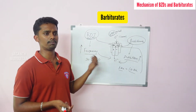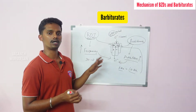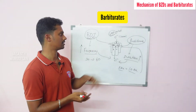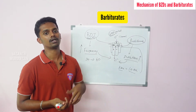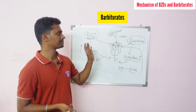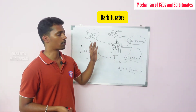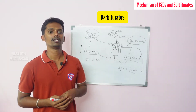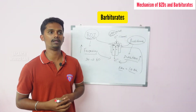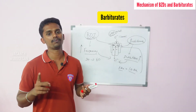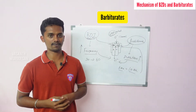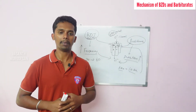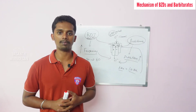Otherwise, both perform the same function as GABA. The chloride level increases, hyperpolarization occurs, the cell becomes irresponsive, CNS is depressed, and sedation and hypnosis are produced. This is the Mechanism of Action of Benzodiazepines and Barbiturates.